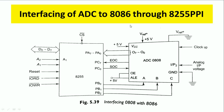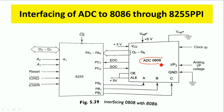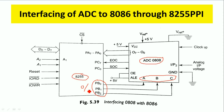Now we will see the interfacing of ADC 0808 to 8086 microprocessor through 8255 PPI. In the interfacing diagram, the ABC address lines used to select an analog input are connected to 8255 Port B. Port B signals of 8255 act as output port, so by using Port B we can select a particular analog input of ADC 0808. For example, analog input 2 is selected by sending 010 on Port B.